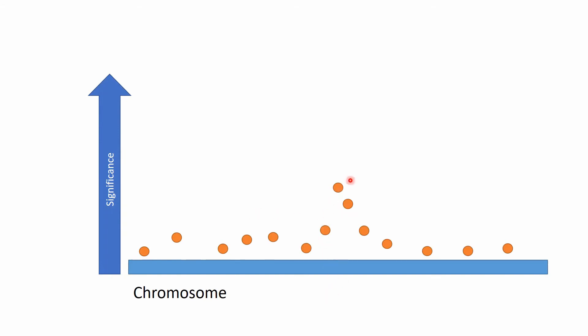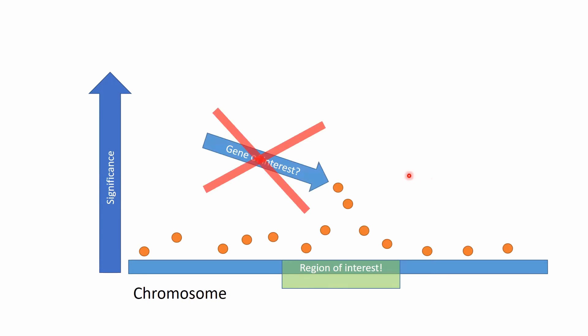We see some kind of signal, so the question is: is this the gene of interest that influences our trait? Because we are speaking about SNPs that are themselves just markers and not causal variants, this is not the gene of interest but shows which region of the genome is interesting for our case. The gene of interest most likely resides somewhere in this region.